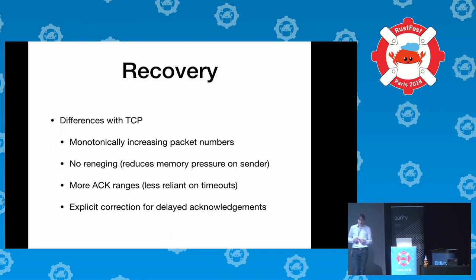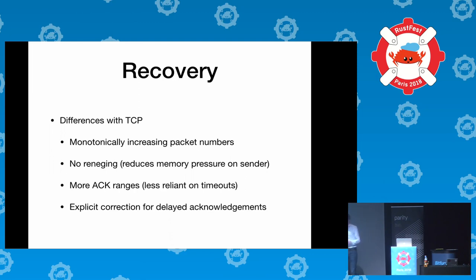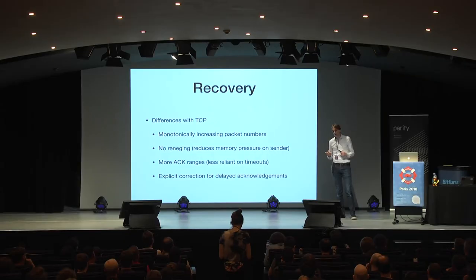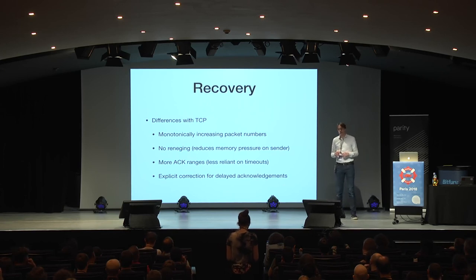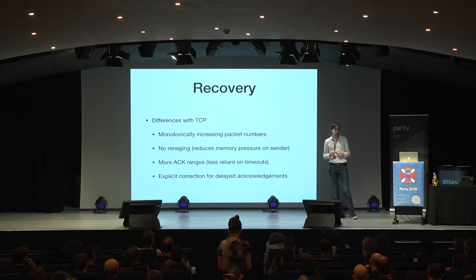TCP actually allows you, in some cases, to go back on acknowledging packets — this is called reneging. This could happen if you lose some packets and buffer a bunch of packets after that, and then the receiver is allowed to say this packet loss thing is taking too much time, I don't want to buffer these packets anymore. But there was a paper that showed that this doesn't actually function in practice — it's used only rarely but causes substantial complexity on both sides. So reneging was dropped from QUIC.